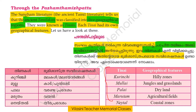From the information in Sangham Literature or Palanthamil Paattukal, the ancient Tamilakam was classified into five geographical regions known as Thinais, and each Thinai had its own geographical features. These are: Kurinji — hilly zones; Mullai — jungles and grasslands; Palai — dry land; Marudam — agricultural fields; and Neythal — coastal zones.